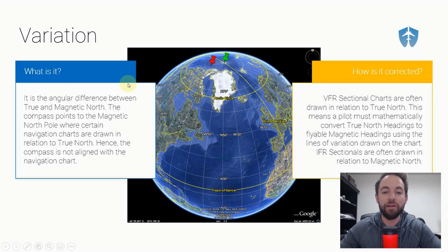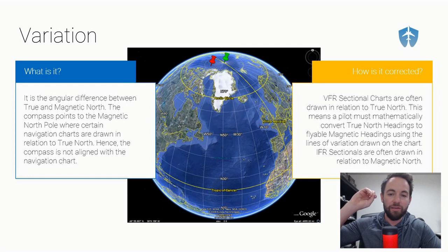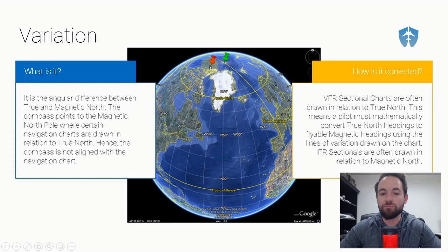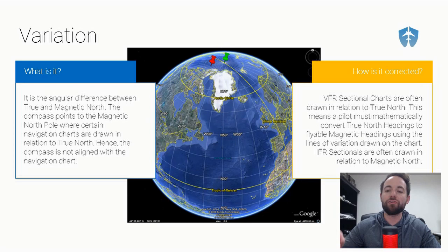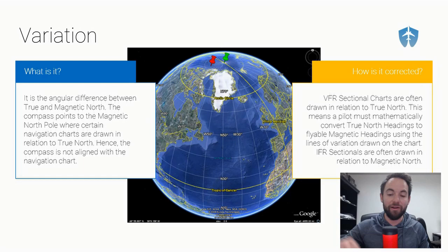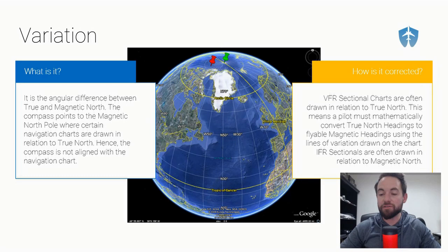Looking at the picture here, true north is the green pin — the most northern point on the planet. Magnetic north is where the red pin is, so you can see it's not right at the north pole. Because of that, VFR sectionals in particular are drawn in relationship to true north, starting at the green pin, while our compass is pointing at the red pin. Therefore, pilots must make mathematical calculations to convert true north headings to flyable magnetic headings using lines of variation drawn on VFR sectional charts.